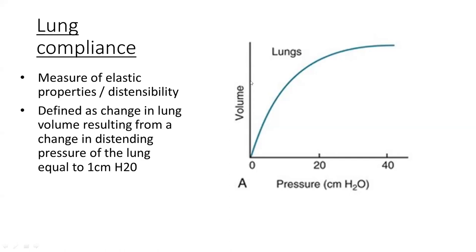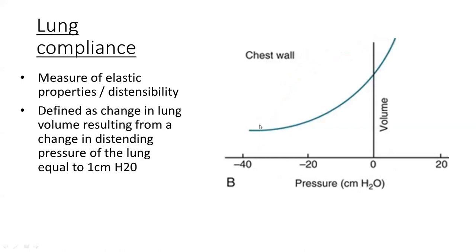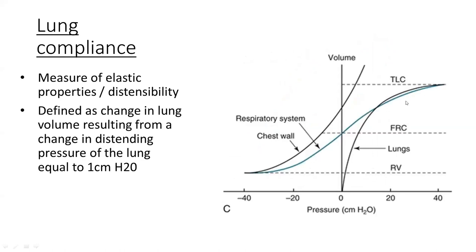In addition to lung compliance, there is chest wall compliance, which is also a curvilinear graph that plateaus below a certain pleural pressure. When the two graphs are combined, we get a sigmoid curve representing the compliance of the entire respiratory system — this is the static pressure-volume graph. The compliance is best within a certain zone of pressure and volume: during tidal breathing, compliance is optimal; beyond total lung capacity the lungs cannot expand further, and below residual volume the lungs will not collapse, preventing infinite expansion or total collapse.